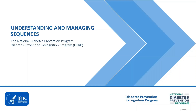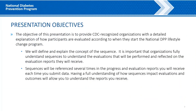The National Diabetes Prevention Program, Diabetes Prevention Recognition Program: Understanding and Managing Sequences. The objective of this presentation is to provide CDC recognized organizations with a detailed explanation of how participants are evaluated according to when they start the National DPP Lifestyle Change Program. We will define and explain the concept of the sequence. It is important that organizations fully understand sequences to understand the evaluations that will be performed and reflected on the evaluation reports they will receive once data has been submitted. Having full understanding of how sequences impact evaluations and outcomes will allow you to understand the reports you receive.